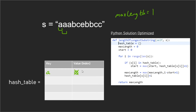We update the value in the hash table with the new index, which is now one. In the next iteration we encounter another 'a', so we do the same thing — check if 'a' is in the hash table, it is, so the new start adjusts again to form a new sliding window. Max length doesn't change again, and we update 'a' to index two. Then we move on to 'b'.